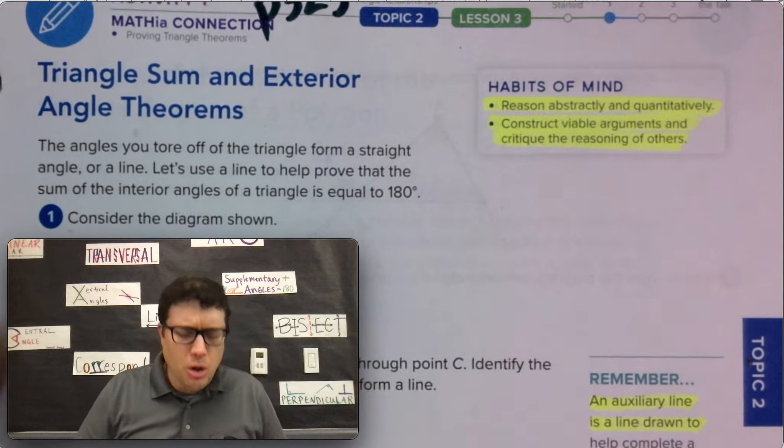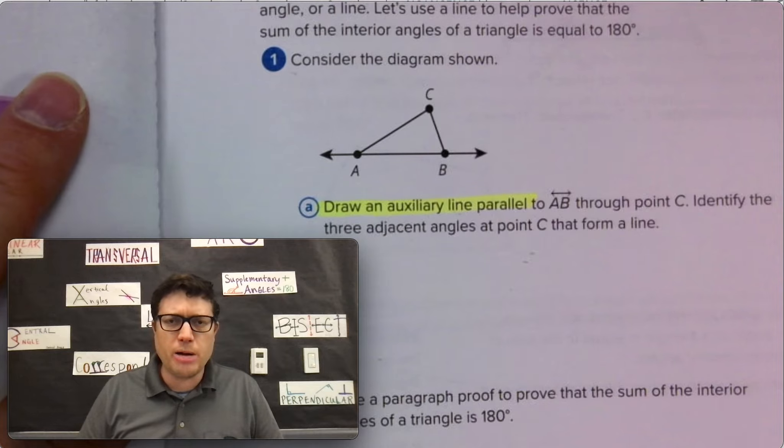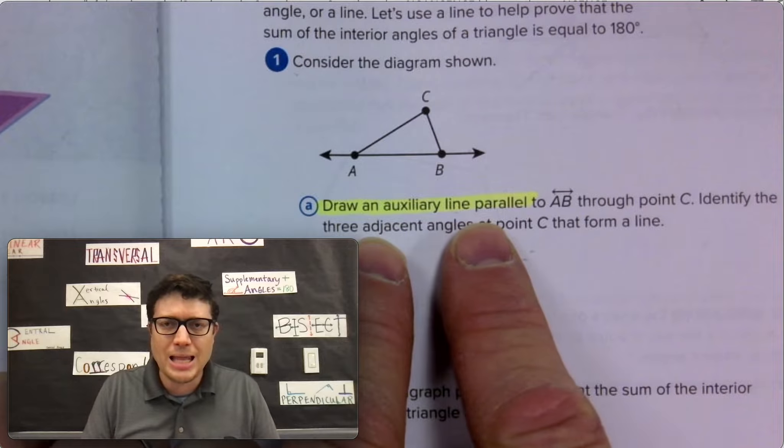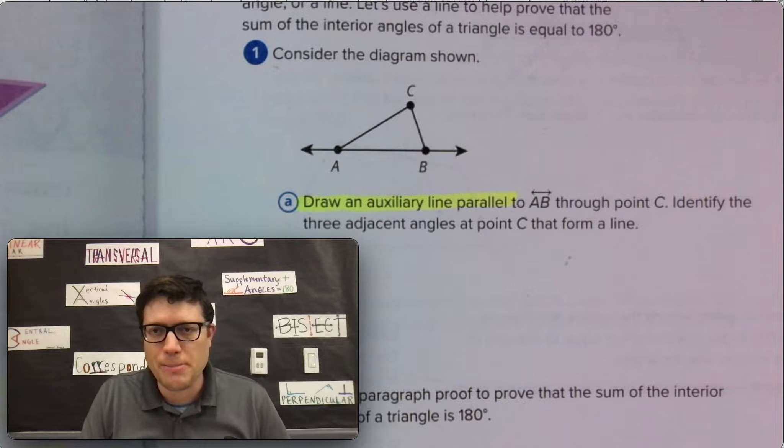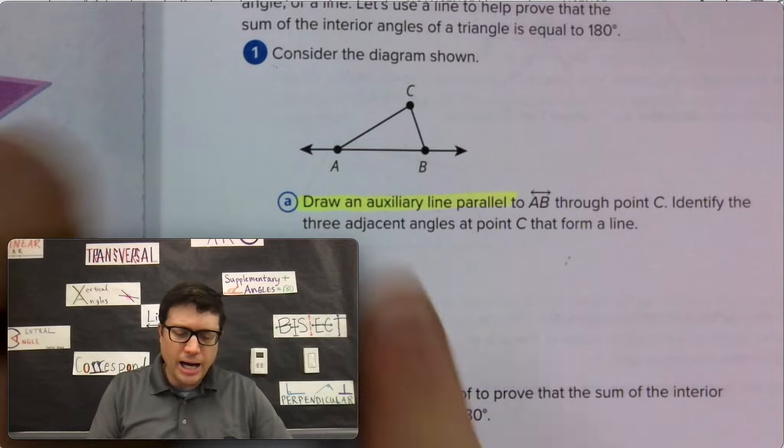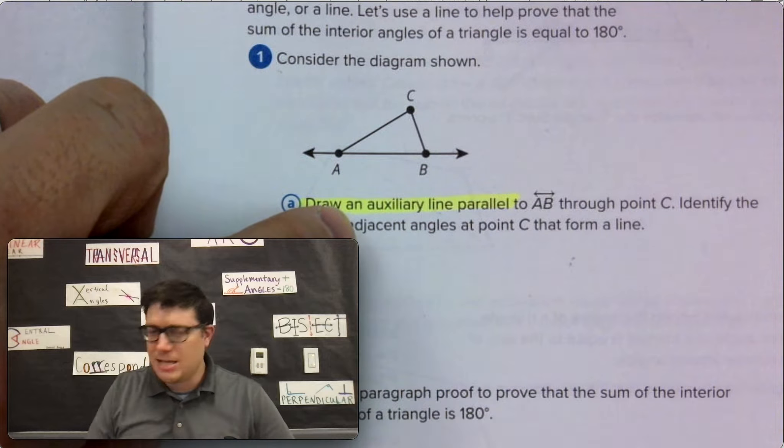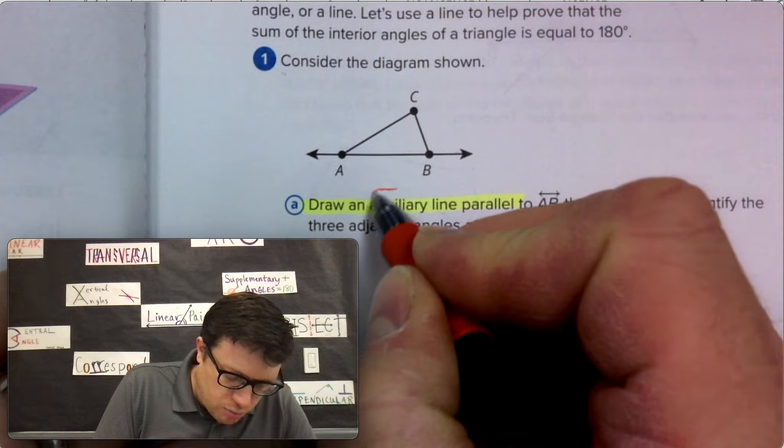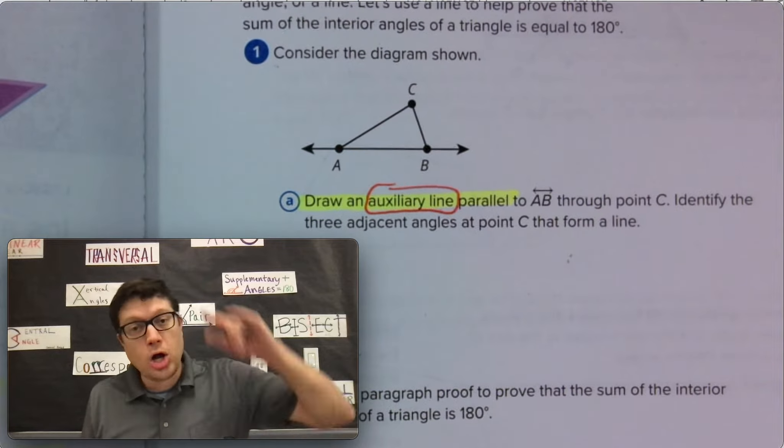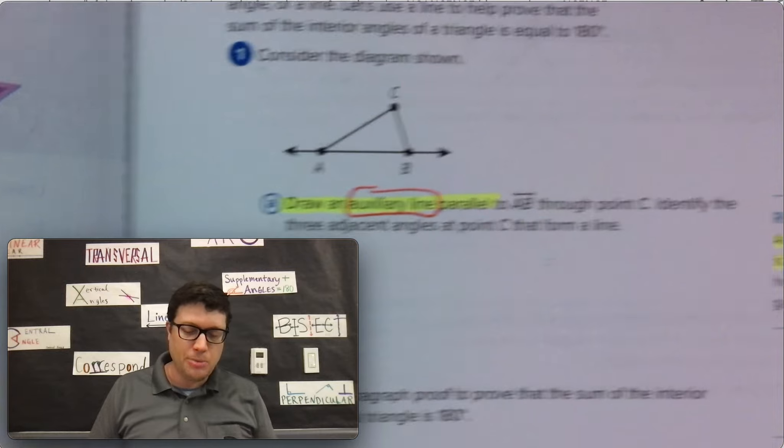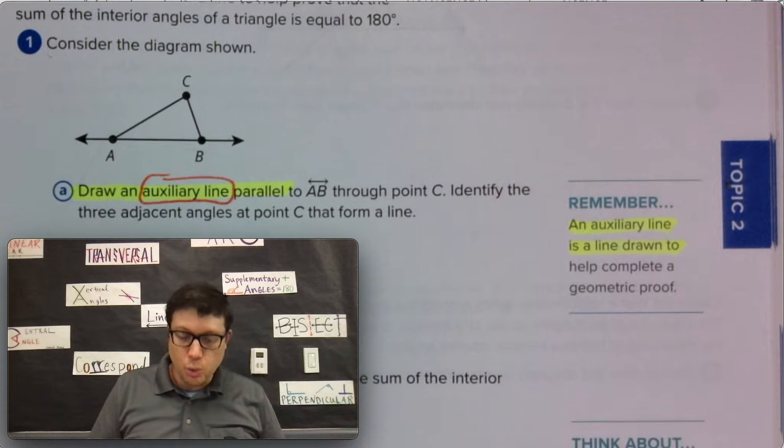Consider the diagram shown. Draw an auxiliary line parallel to AB through point C and identify the three adjacent angles at point C that form a line. I highlighted auxiliary line because that seems to be like this random or you didn't know that it needed to be there until I drew it because I'm the expert, but you will all the same.